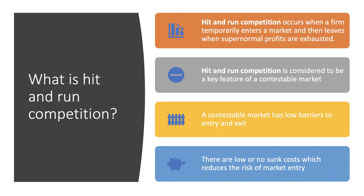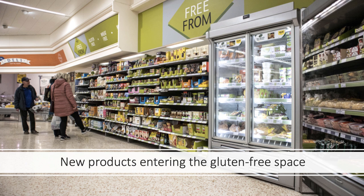Typically, hit and run competition is when you get the appearance of a challenger brand or a challenger product to challenge the existing market power of dominant firms. Some examples: if you take the UK supermarket industry, digging down, you're seeing lots of new products entering the free-from and gluten-free space because they think there's some potential profit to be made.